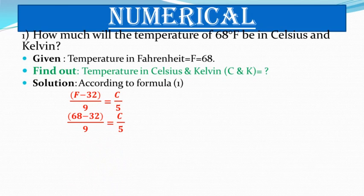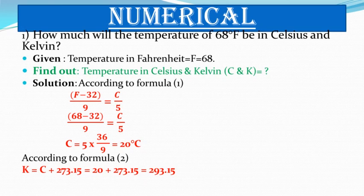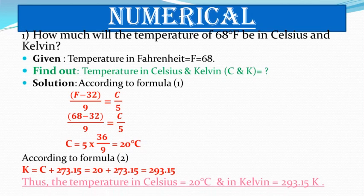So, (68 − 32) / 9 = C / 5. By cross multiplication, C = 20°C. Now using formula 2: K = C + 273.15 = 20 + 273.15 = 293.15 K. Thus, the temperature in Celsius is 20°C and in Kelvin it is 293.15 K.